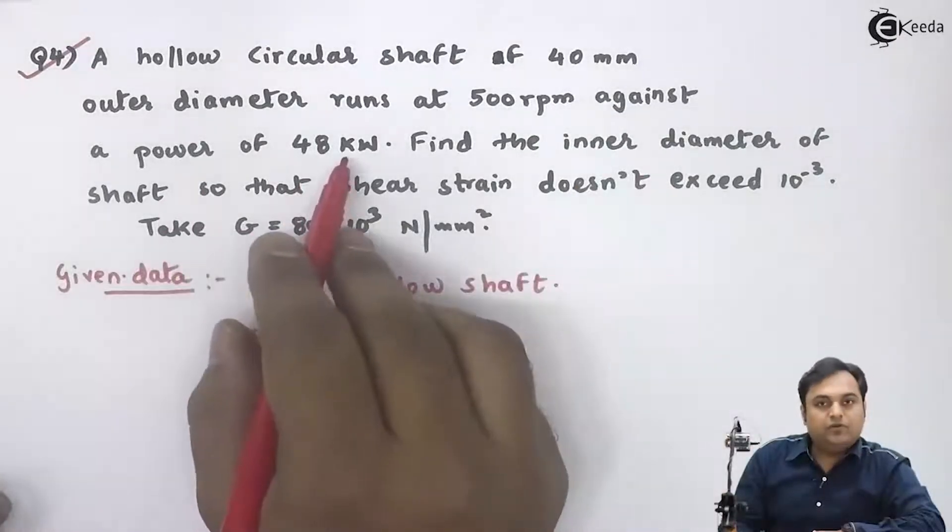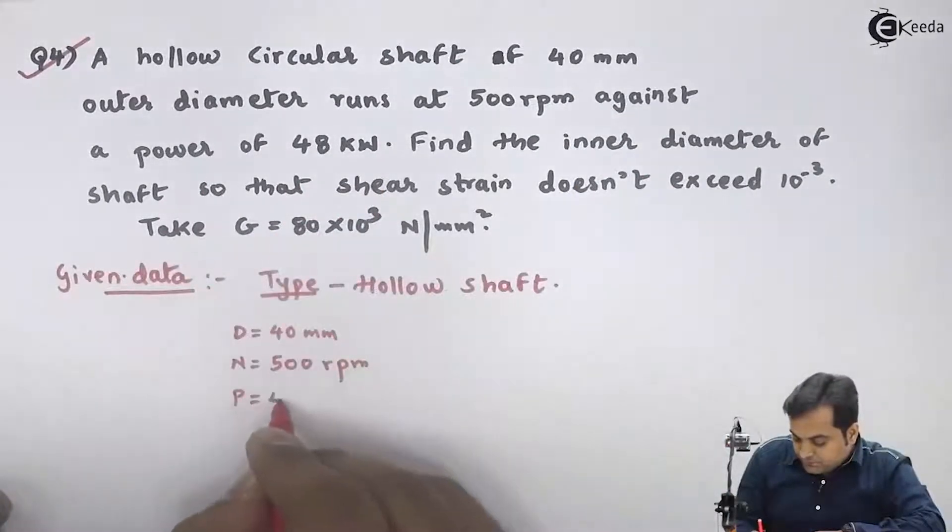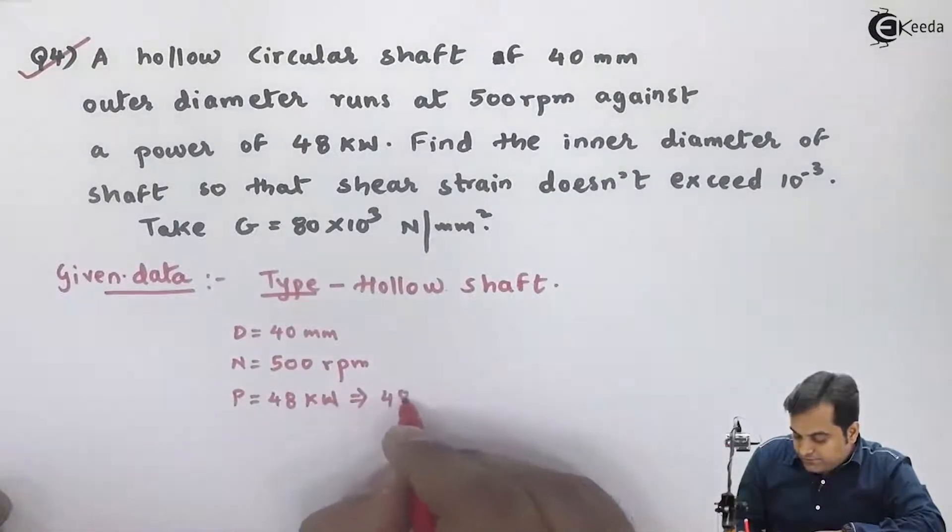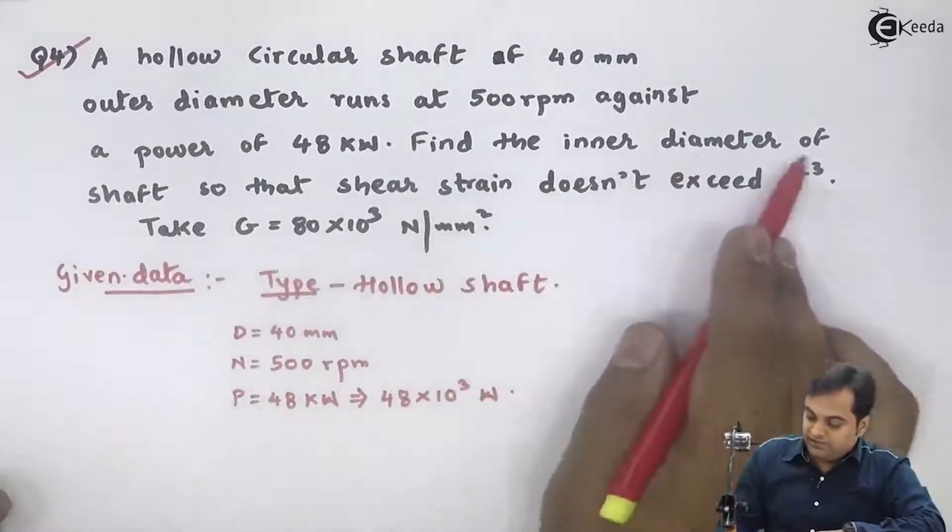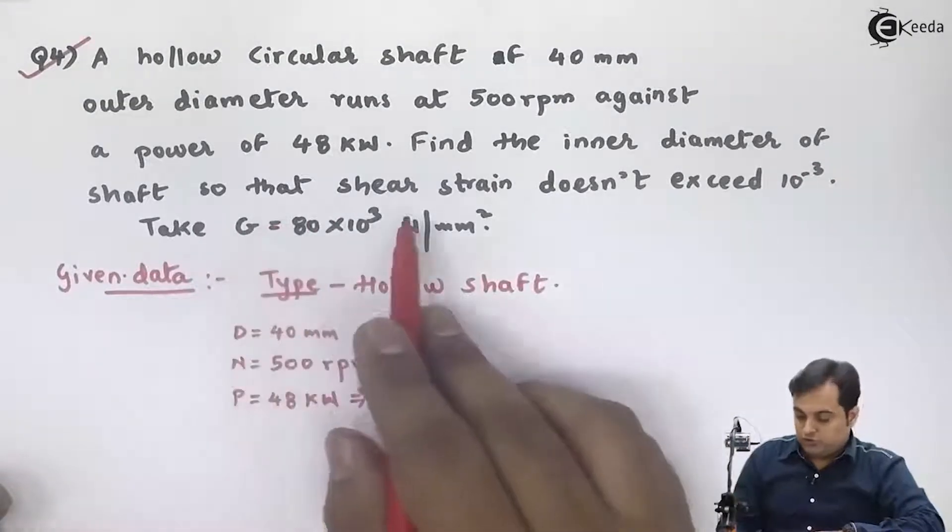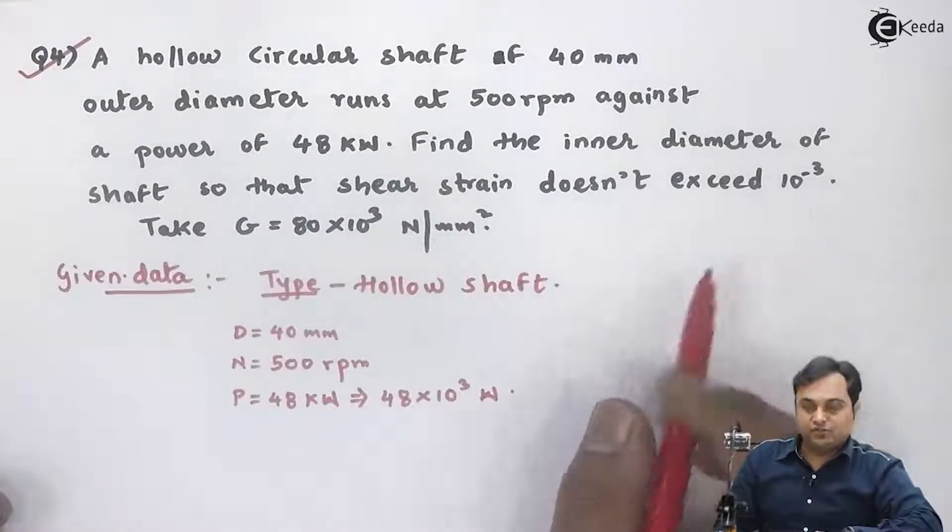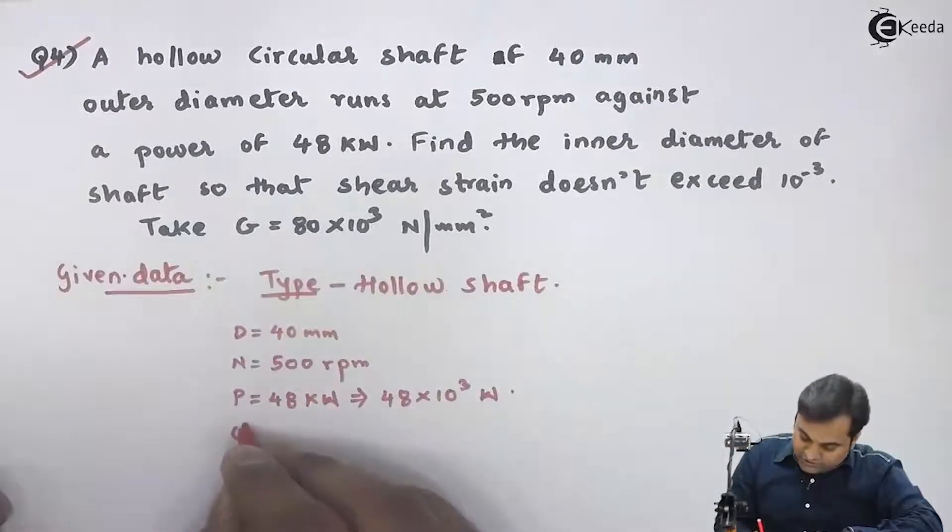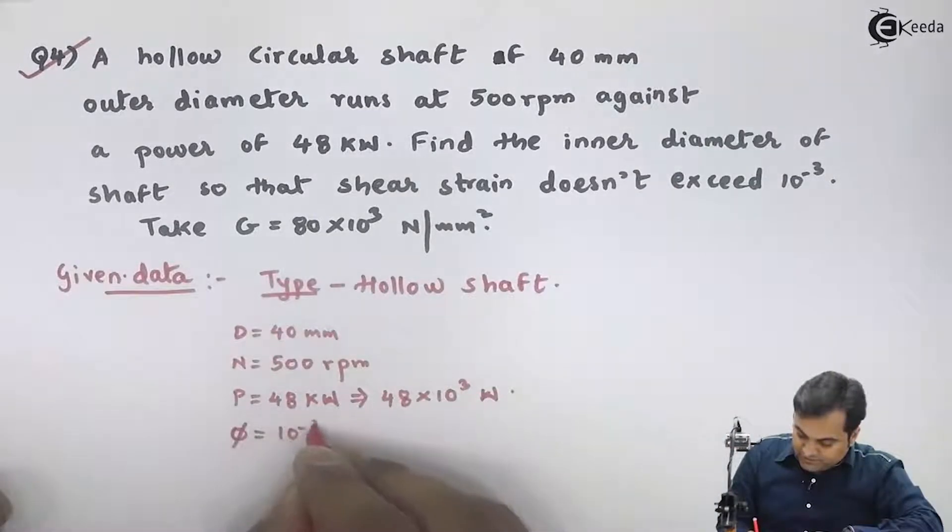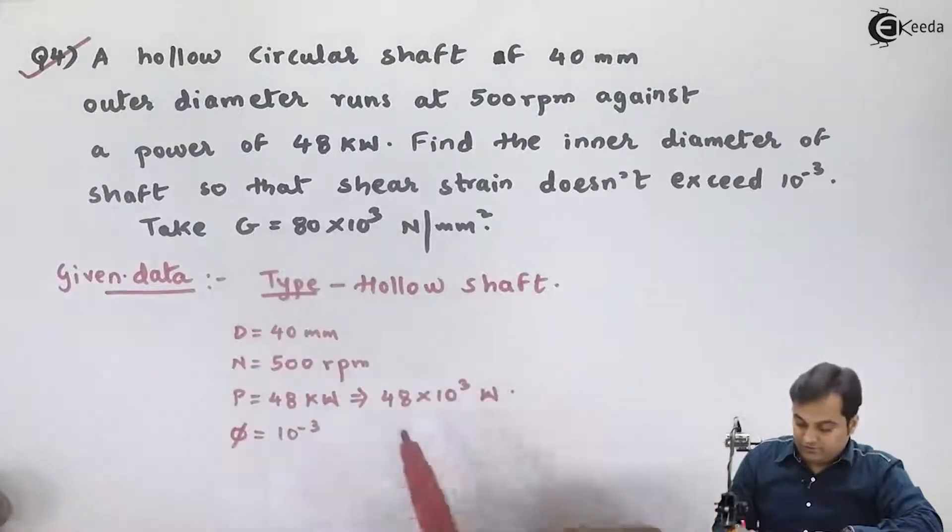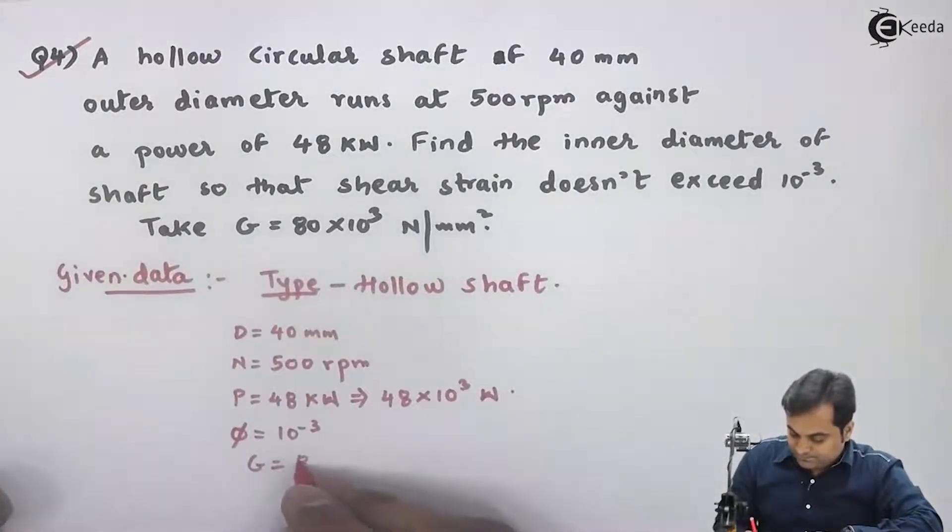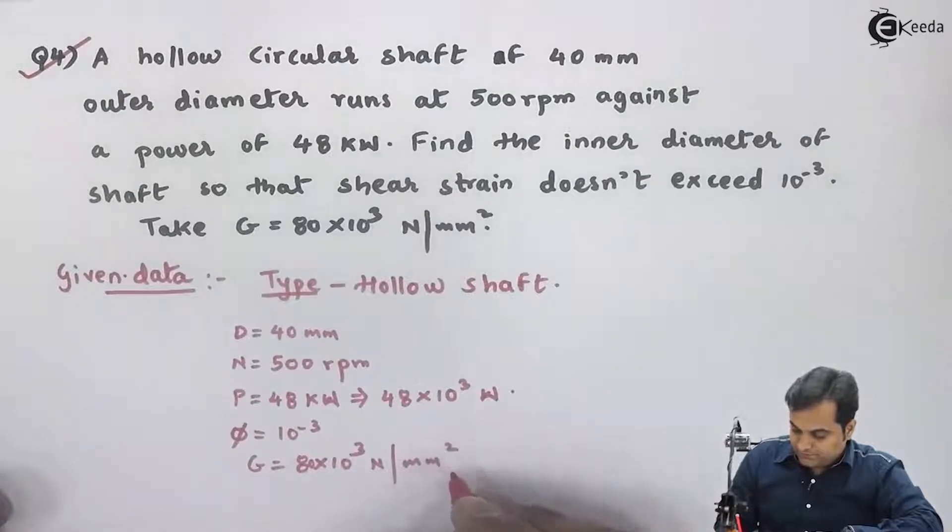Against a power of 48 kilowatts, so it is 48 times 10 to the 3 watts. Find the inner diameter of the shaft so that shear strain doesn't exceed 10 to the minus 3. Shear strain is denoted by phi, this 10 to the minus 3. Modulus of rigidity: 80 times 10 to the 3 Newton per mm square.